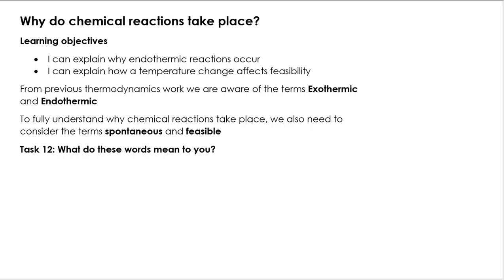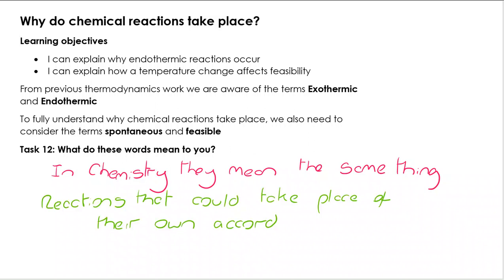In terms of why chemical reactions take place, I've got two objectives here. I can explain why endothermic reactions occur and I can explain how a temperature change affects feasibility. The first question here is about the word spontaneous and feasible - have a think about what they mean to you.